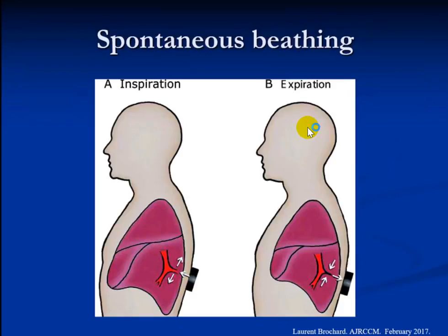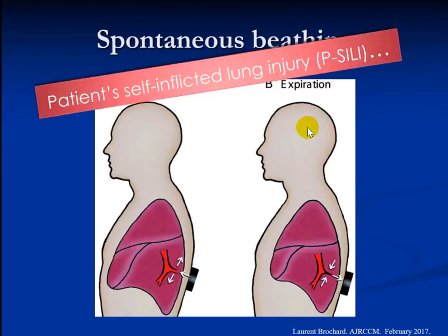We are also learning that spontaneous breathing in the early phase of ARDS is not good. When patients make spontaneous breathing efforts, they create more transmural pressures. What injures the lung is not the difference between plateau pressure and PEEP — it is actually between the plateau and intrapleural pressure, which is hard to measure without extra devices. Dr. Brochard has named this entity 'patient self-inflicted lung injury,' or SILI. Allowing the patient to breathe spontaneously in early ARDS increases transmural pressure, causes more lung injury, and leads to worse outcomes.